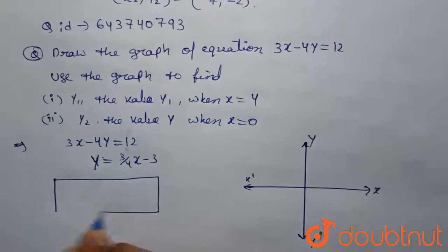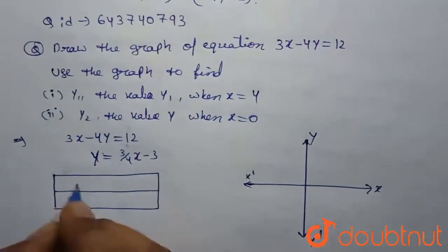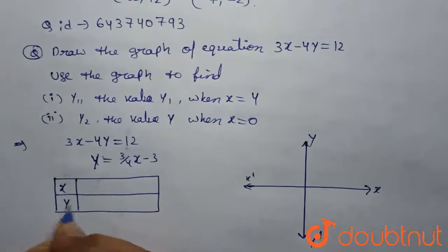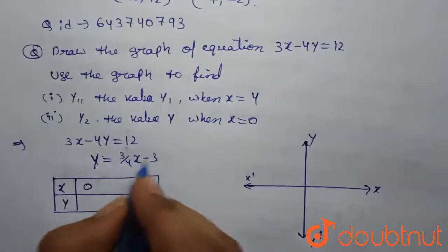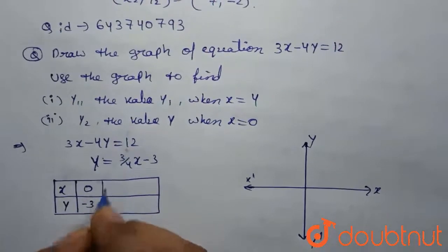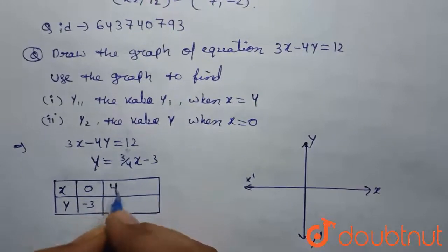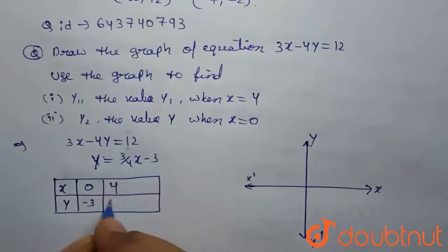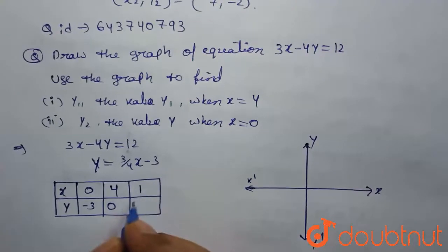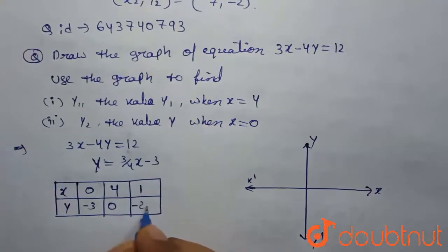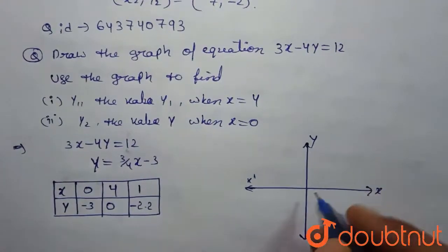Assign the values to find out the values of x. Finally, to draw the graph, x values, y values. When x is equal to 0, y will be minus 3. When x is equal to 4, y would be 3 minus 3 will be 0. When x is equal to 1, y is minus 2.2 like this.